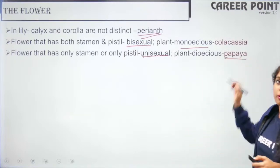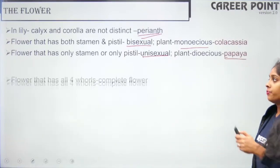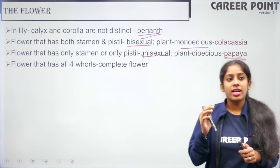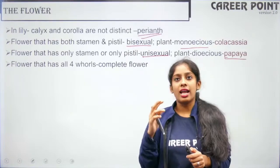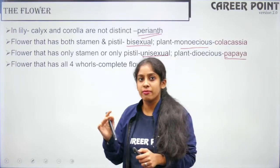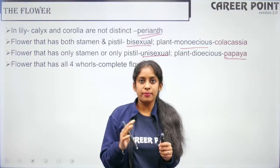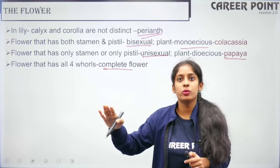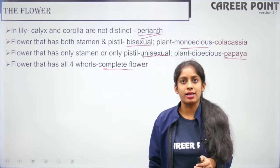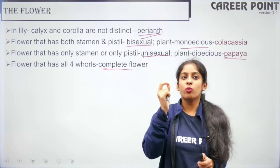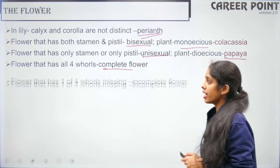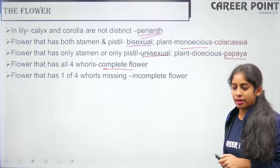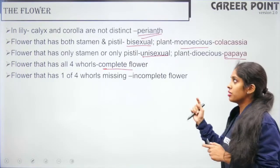When a flower has all four whorls — calyx, corolla, stamen and pistil — it is called a complete flower. Even when one part is missing it is called an incomplete flower.